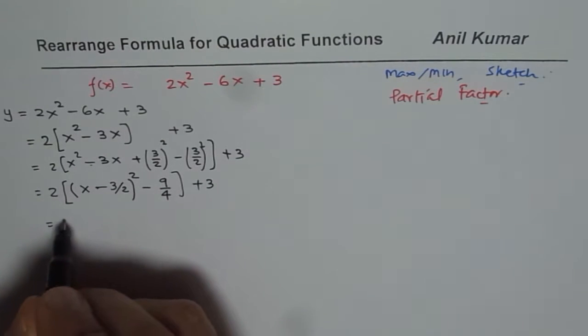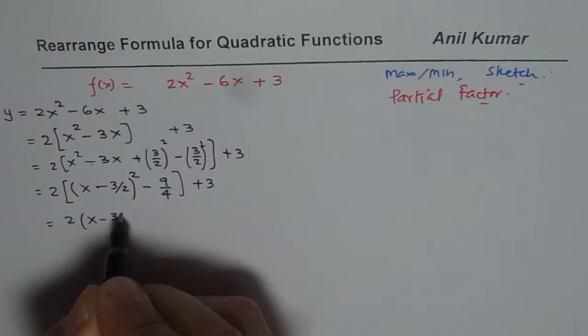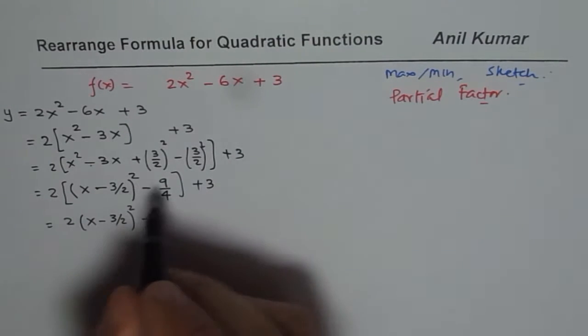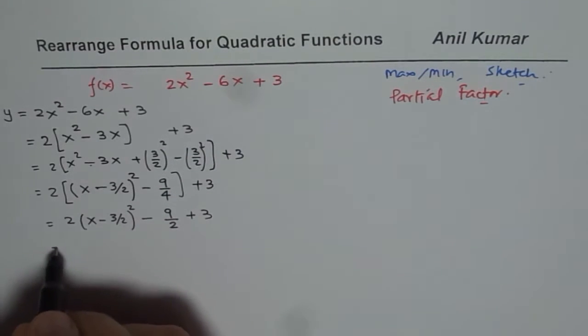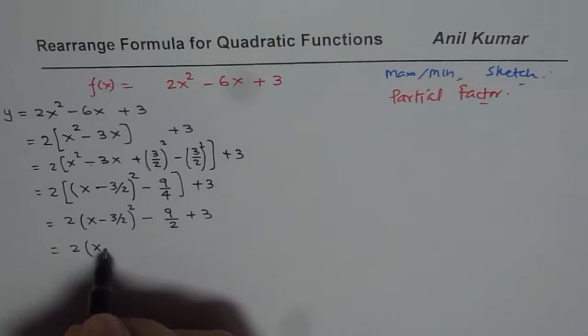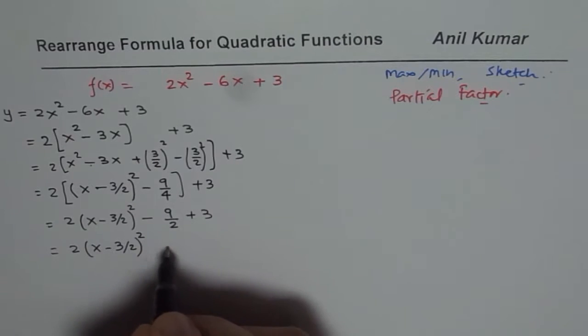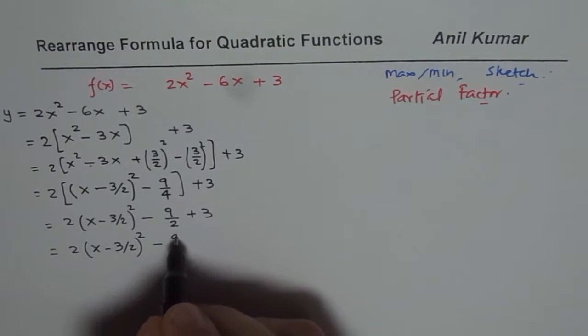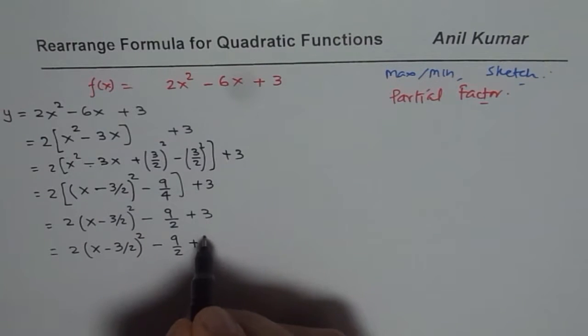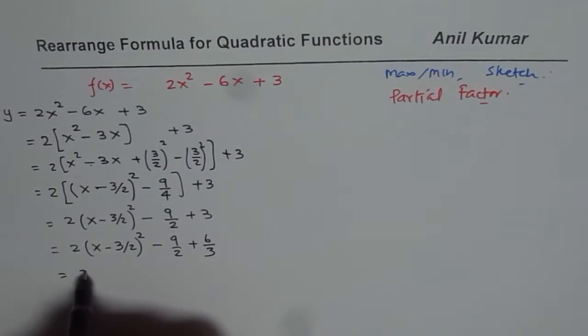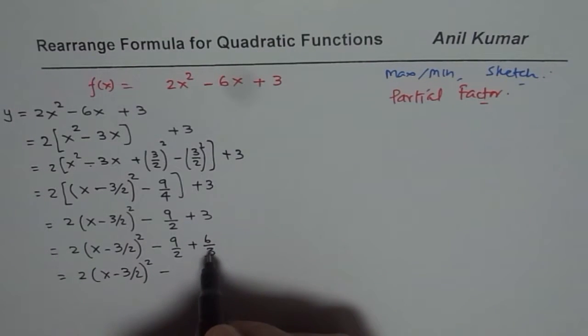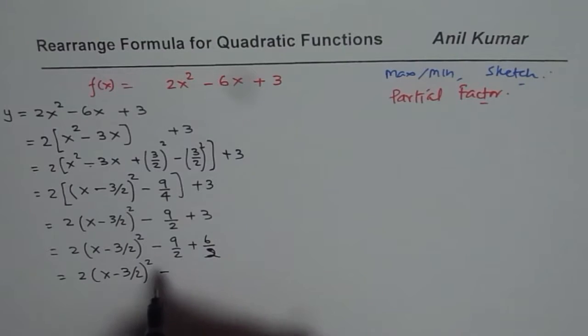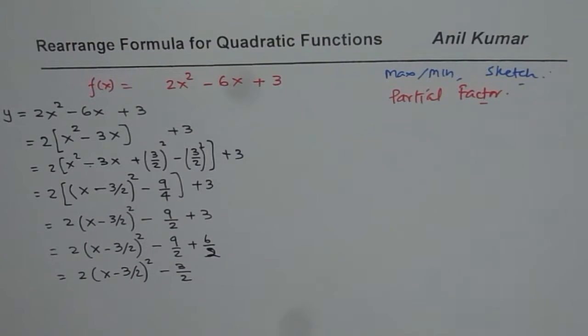Now open the bracket. So you get 2 times x minus 3 over 2 whole square minus 2 times 9 divided by 4 gives you 9 over 2 plus 3. Now combine these two terms. We have 2 times x minus 3 over 2. Now minus 9 over 2, we need to have common base. So I will do 6 over 2 for this number. So we have 2 times x minus 3 over 2 whole square minus, this was 6 over 2, so it is minus 9 plus 6, so it is minus 3 over 2 here.